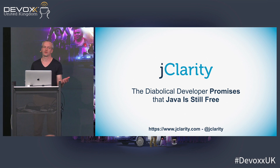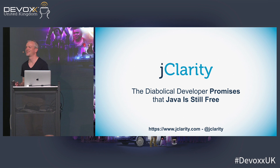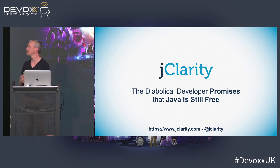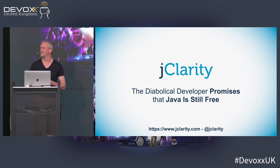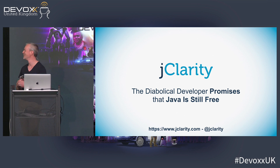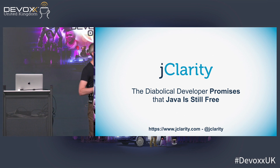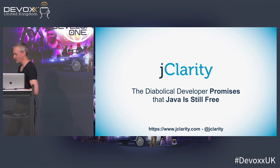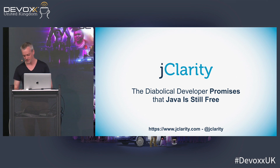A few things have happened in the Java industry in the past six months to a year. One of the things that happened, for those who missed it, is that Java is no longer free and we're all going to have to do Node.js. Node.js isn't all bad, seriously. I love the build tools, the ecosystem — it's great.